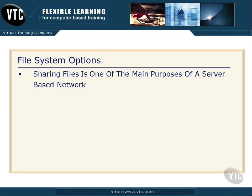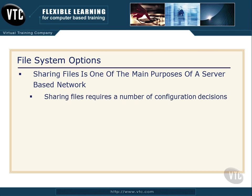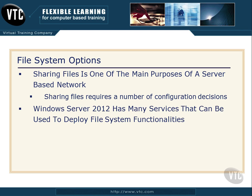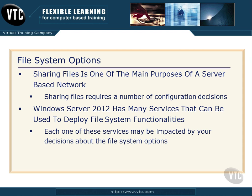First of all, sharing files is one of the main purposes of a server-based network — it's how we got into this mess to start with. But when we start thinking about actually sharing files from a server, we have a number of configuration decisions that we need to make. Windows Server 2012 has a lot of different services that can be used to deploy various file system functionalities to make files available to end users. But each one of these services may be impacted by your decisions about the file system options.